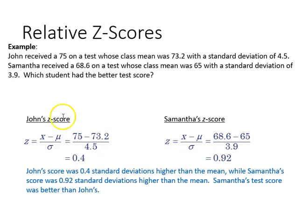If we were to calculate the z-scores for two students in the class and arrive at their z-scores, we could then assess the relative z-scores. John received a 75, the whole mean for the class is 73.2, the standard deviation was 4.5. Samantha got 68.6, and her class mean is 65, the standard deviation of 3.9. Which student had the better score?